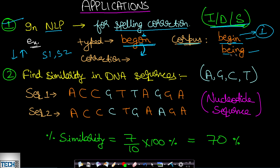Comparing 'begun' with 'being', we see differences at three characters: G, O, N versus I, N, G. So we would need to substitute three characters, giving an edit distance of around three. We take the word with the minimum edit distance as the closest match. Since 'begin' has edit distance one, we make the correction as 'begin'. This is how edit distance is used in natural language processing applications.